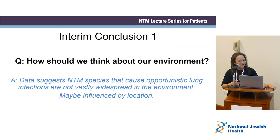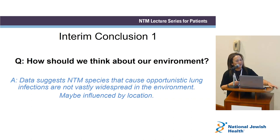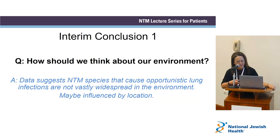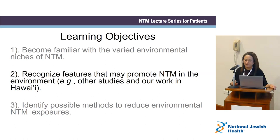Interim conclusion one: the data suggests NTM species that cause opportunistic lung infections may not be as widespread or ubiquitous as we think — less than 30% of those samples are NTM positive. And among that 30%, how many are abscessus, how many are MAC? It does matter, and it varies by the environment and may be influenced by location.